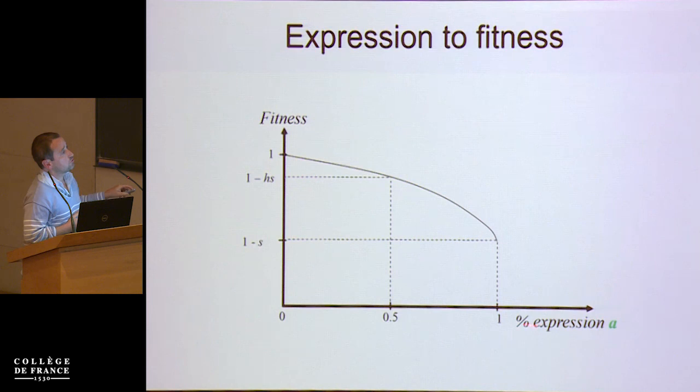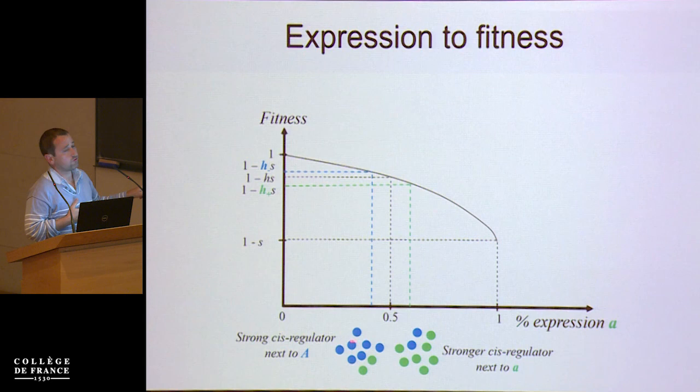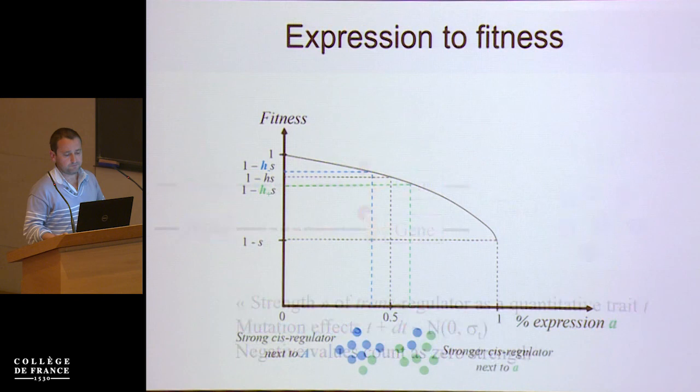To link up the different possibilities, you make it continuous — that would be the percent of defective proteins along an axis, and here would be the fitness with three values: one, one minus HS in the standard heterozygote, and one minus S for the homozygote. Depending on where you are on the fraction of defective protein, you will have a different value for fitness.